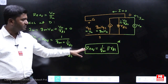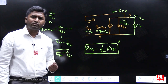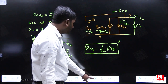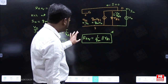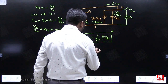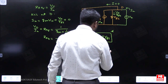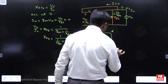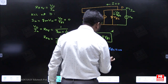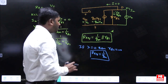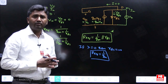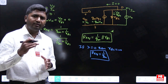We can simplify further: if the question states channel length modulation is negligible (lambda = 0), then RDS becomes infinite. In that case, R_equivalent simplifies to just 1/GM. This is an important concept with respect to GATE exam.